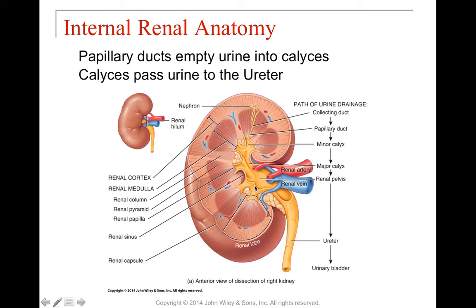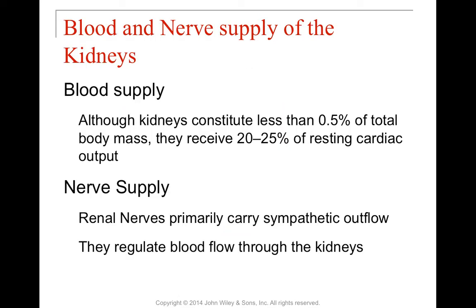The kidneys have quite a lot of blood supply — they're less than 1% of your body mass, about 0.5%, but they get about 20–25% of your resting cardiac output. The renal nerves carry sympathetic outflow and help regulate the amount of blood flow through the kidneys. The kidneys are very susceptible to sympathetic and parasympathetic impulses.